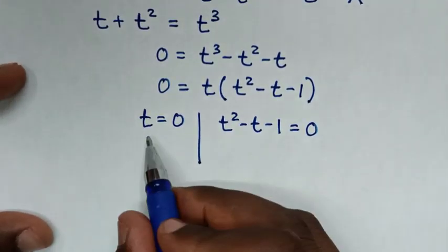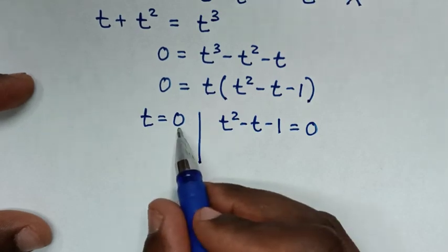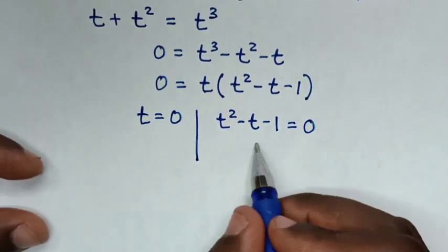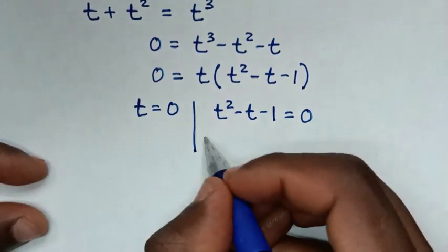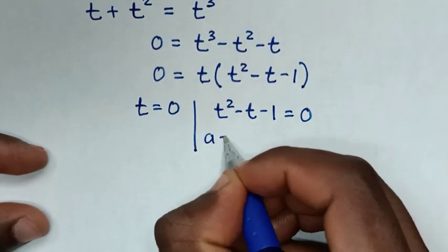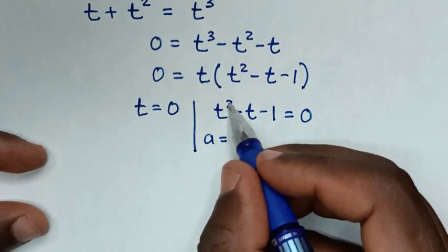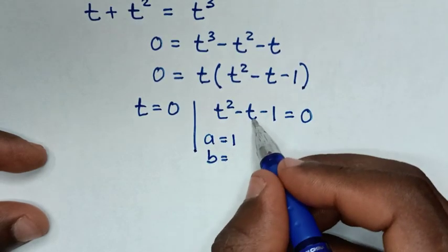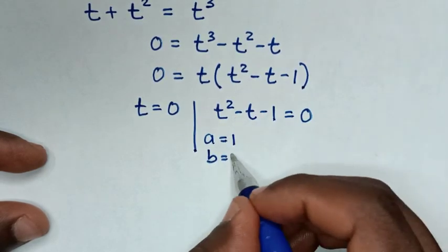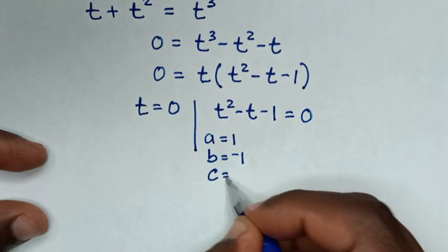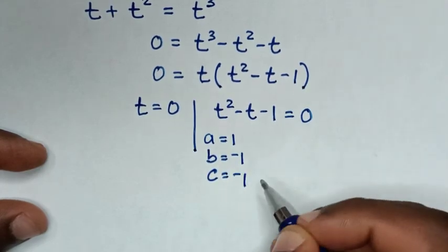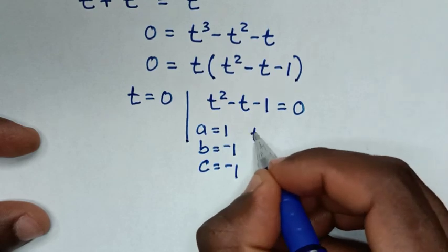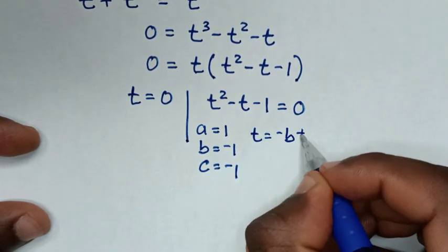From the first solution, t equals 0. For the quadratic equation, we solve using the quadratic formula. Here, a equals the coefficient of t squared, which is 1; b equals the coefficient of t, which is negative 1; and c equals the constant, which is negative 1.